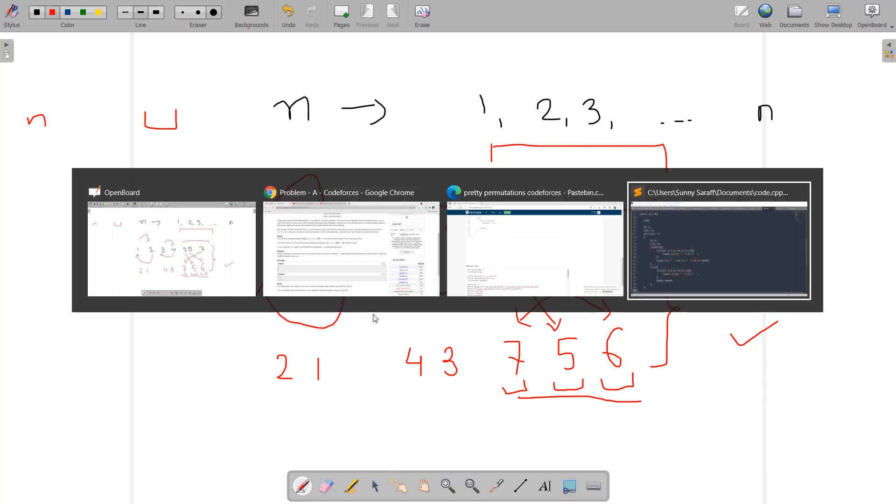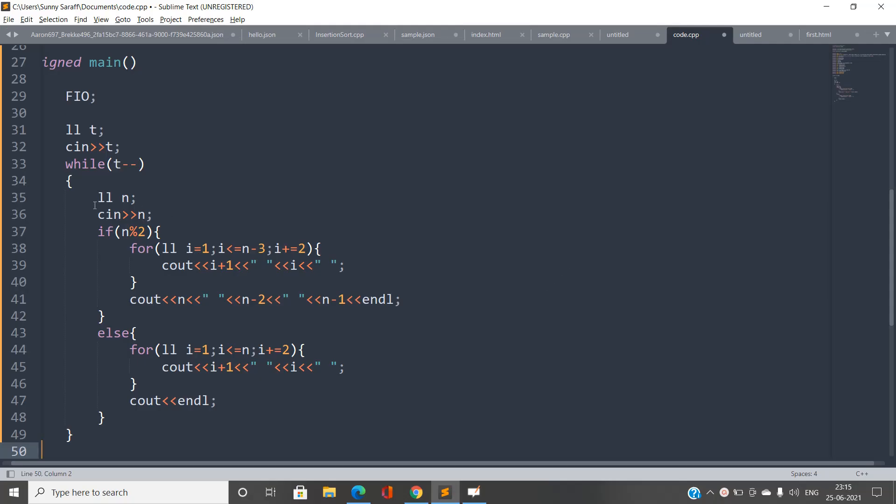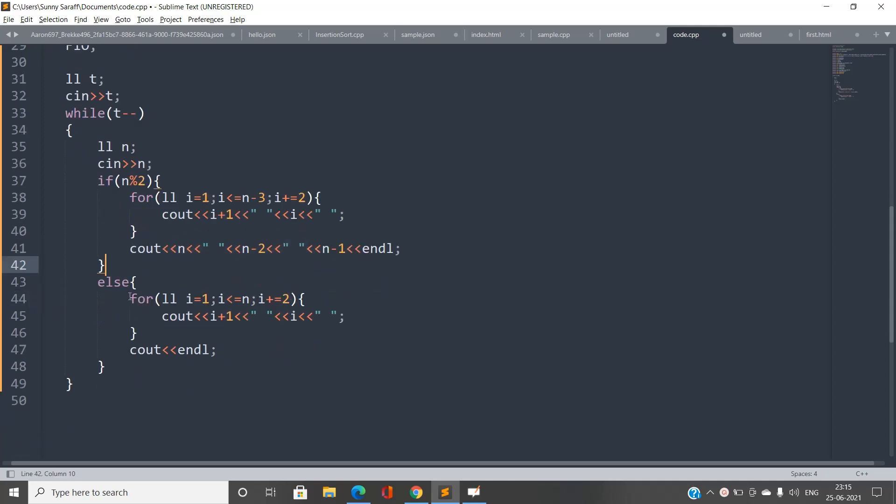If n is odd, you can see I will just traverse up to n minus 3, and each time I will increment by 2. I will print i+1 and i. And finally I will print n, n-2, and n-1 - this will be printed in this fashion. When n is even, you just have to do one thing: print i+1 and i, just swap the adjacent numbers of the permutation. Finally print with a new line.